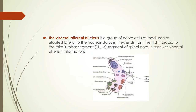The visceral afferent nucleus is a group of medium-sized nerve cells situated lateral to nucleus dorsalis. It also extends from the first thoracic to the third lumbar segment of the spinal cord and receives visceral afferent information. In summary, some cell columns are present throughout the length of the spinal cord — the posteromarginal nucleus, substantia gelatinosa, and nucleus proprius, the largest being nucleus proprius — while Clark's column and the visceral afferent nucleus are limited to specific segments.